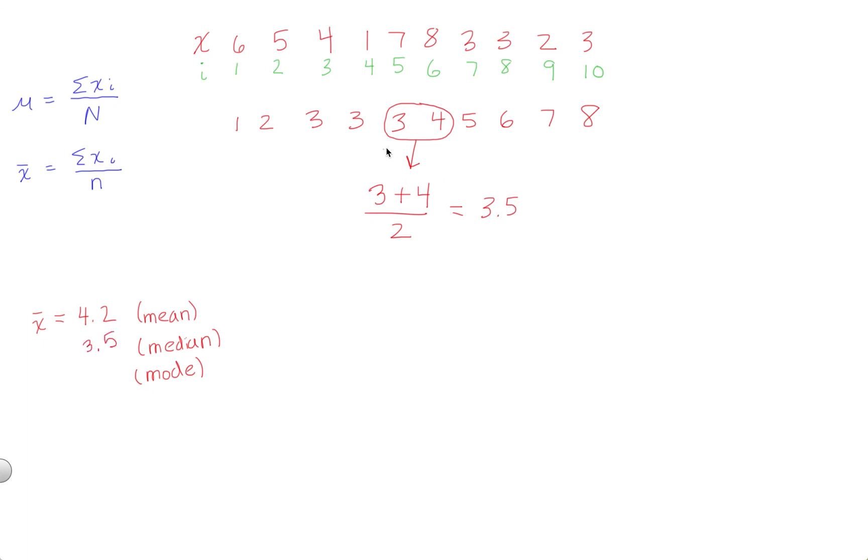The mode is just the most common value. Laying out the numbers in order makes it easy to see that 3 is the mode—it's the most commonly occurring value. And that's our three measures of central tendency.